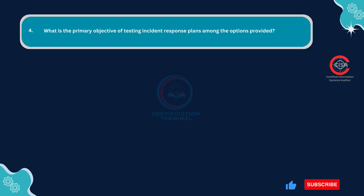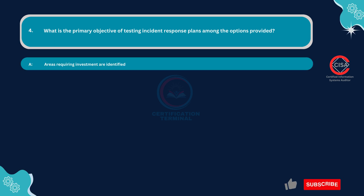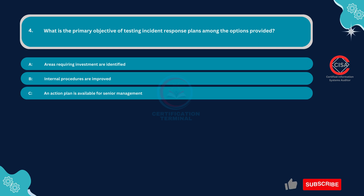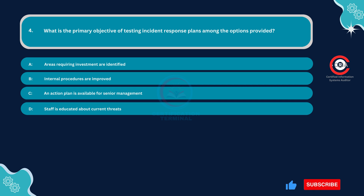Question number four: What is the primary objective of testing incident response plans among the options provided? Option A: Areas requiring investment are identified. Option B: Internal procedures are improved. Option C: An action plan is available for senior management. Option D: Staff is educated about current threats.